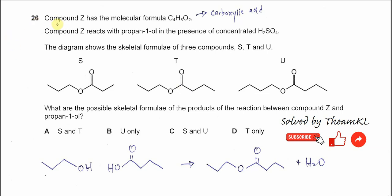Question 26. Compound Z has the molecular formula C4H8O2. Compound Z reacts with propan-1-ol in the presence of concentrated H2SO4, so it's acidification. Propan-1-ol with compound Z - if there is a reaction, this one is a carboxylic acid.